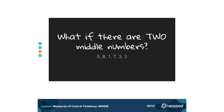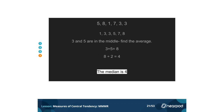What if there are two numbers in the middle? With the data set 5, 8, 1, 7, 3, 3 — Step 1 is to put them in order from least to greatest: 1, 3, 3, 5, 7, 8. When we look at the numbers, we see that 1 and 3 are on the left, 7 and 8 are on the right, and the middle numbers are 3 and 5. So we find the average: 3 plus 5 equals 8, divided by 2 is 4. The median of this data set is 4.